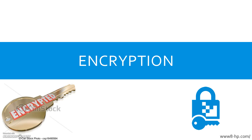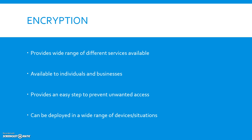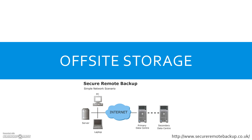The fifth method is encryption, which provides a wide range of services such as symmetric encryption and asymmetric encryption. Symmetric encryption is when encryption and decryption use the same key. Asymmetric encryption is when they use different keys — a public key and a private key. We can link this back to IGCSE computer science. It is available to individuals and businesses and can be deployed in a wide range of devices or situations.